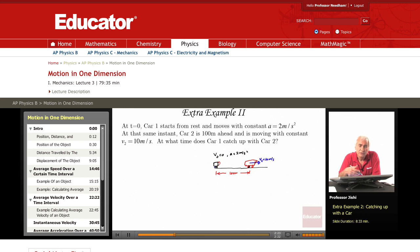Whereas car 1, since it's accelerating at 2 meters per second square, this means that every second, its velocity increases by 2 meters per second.